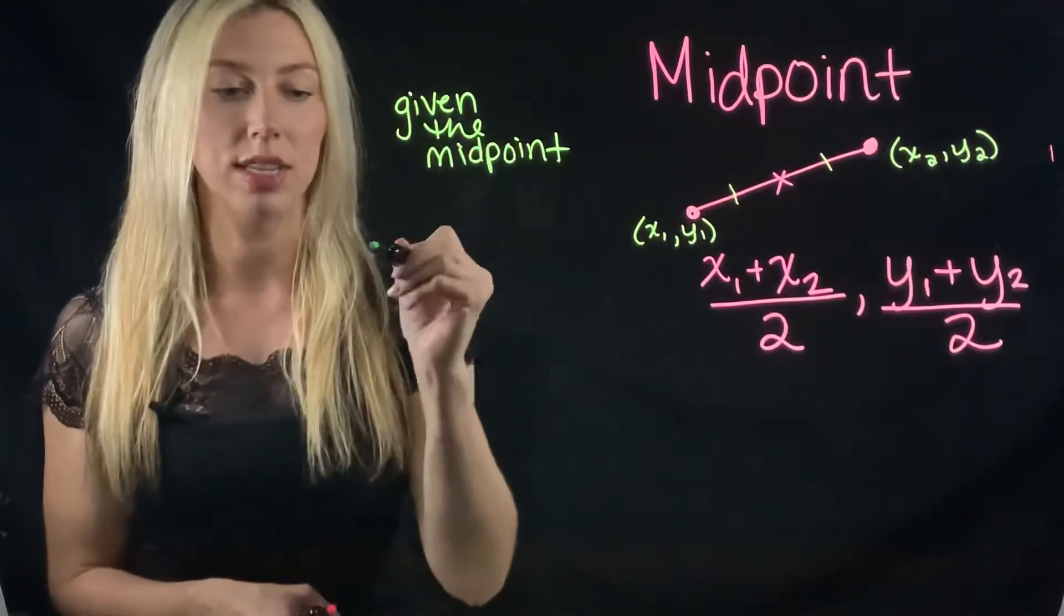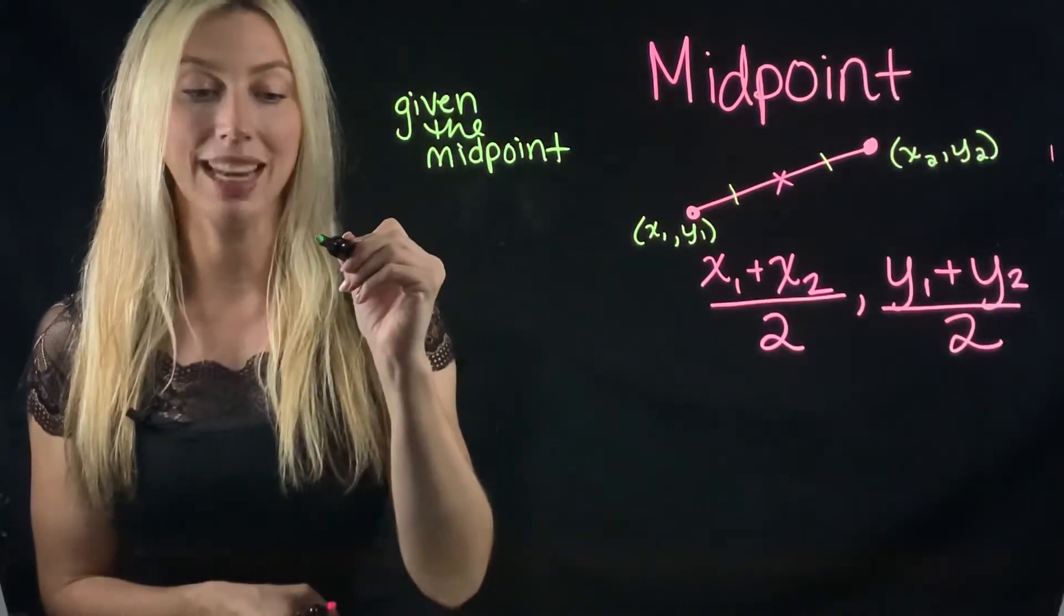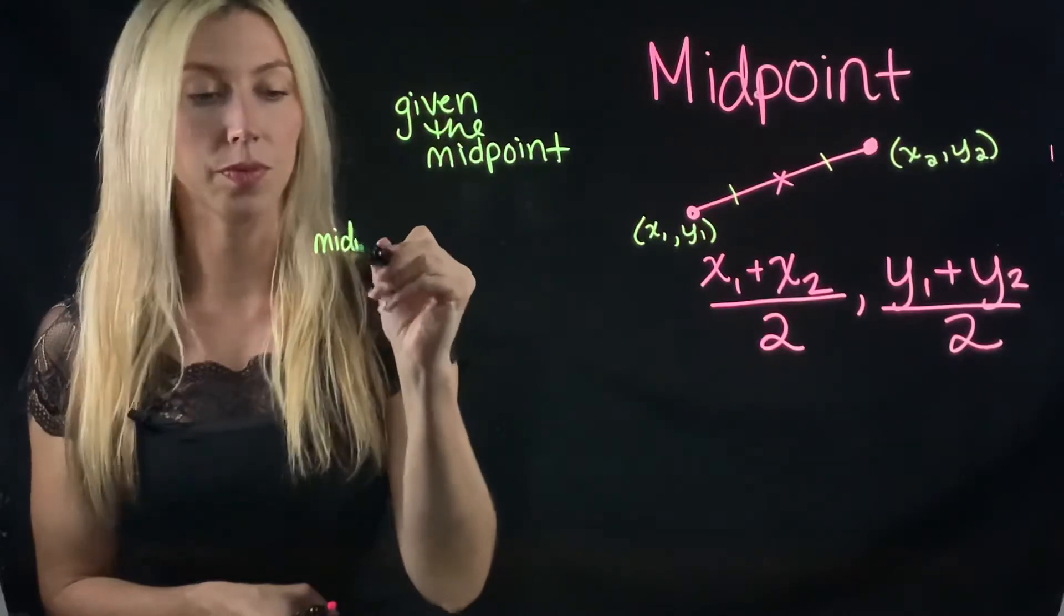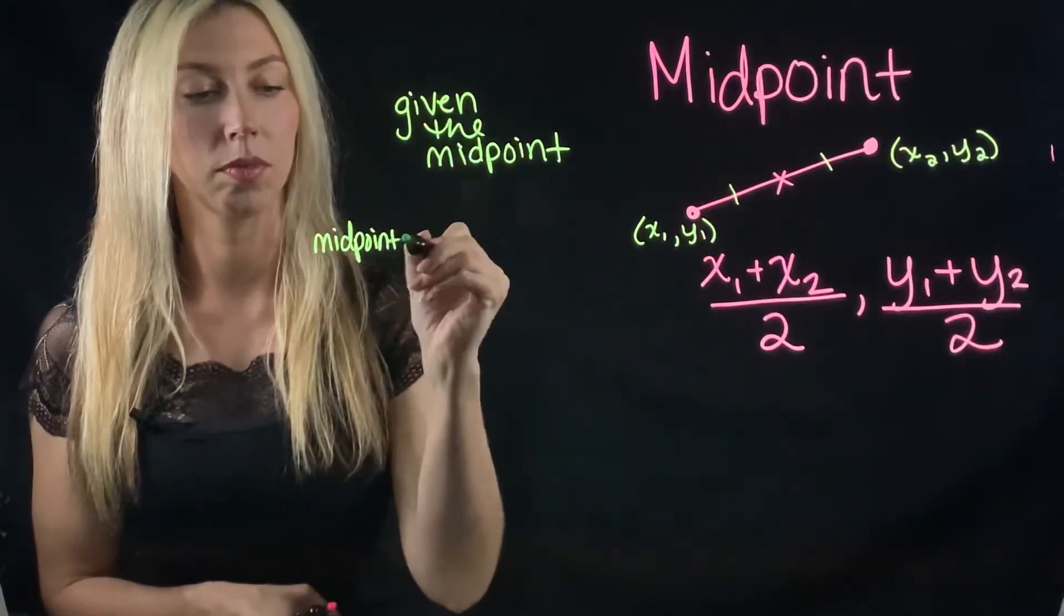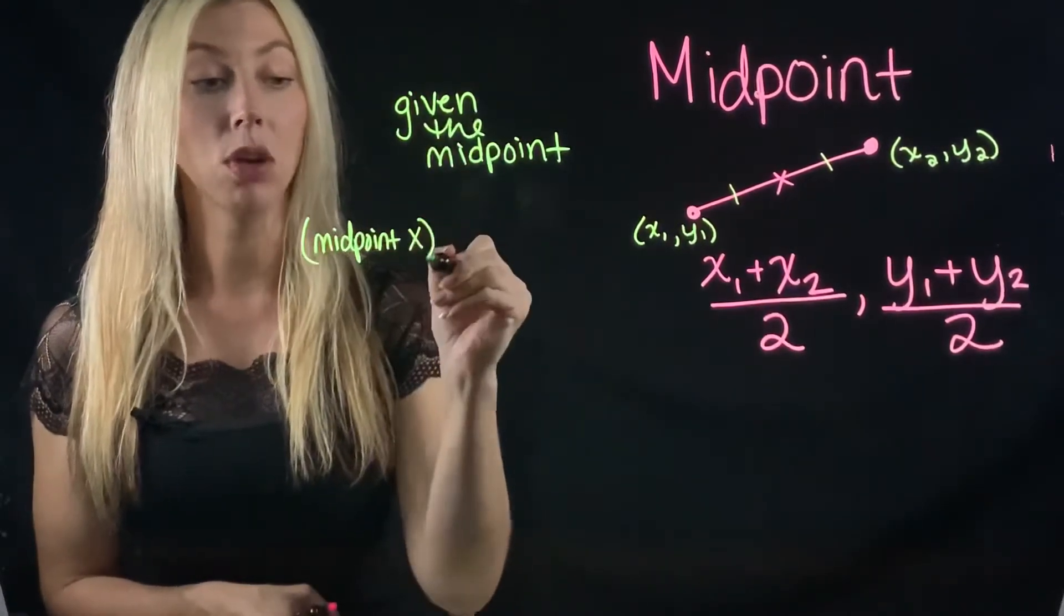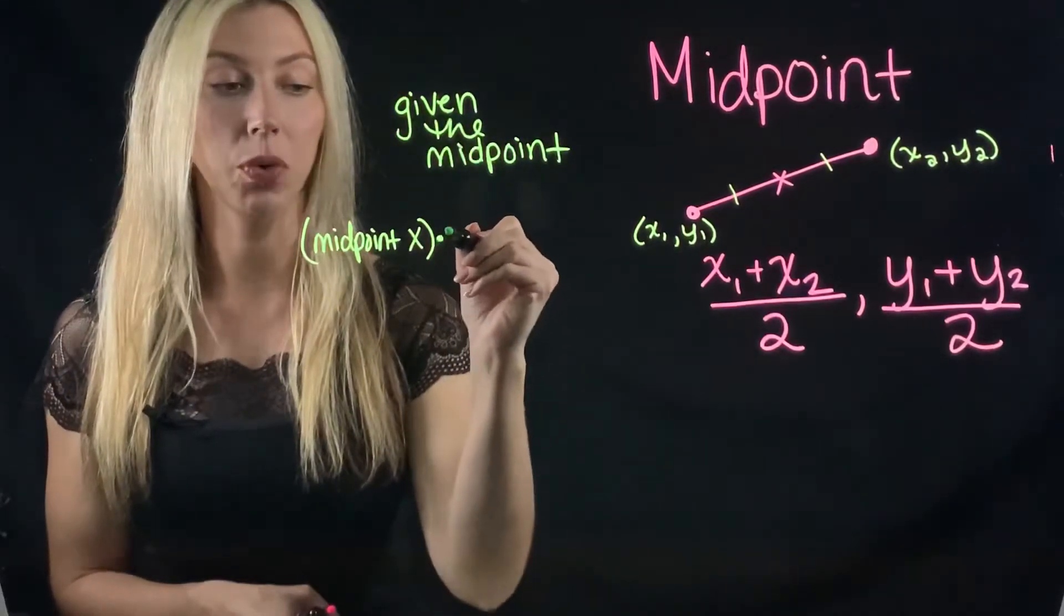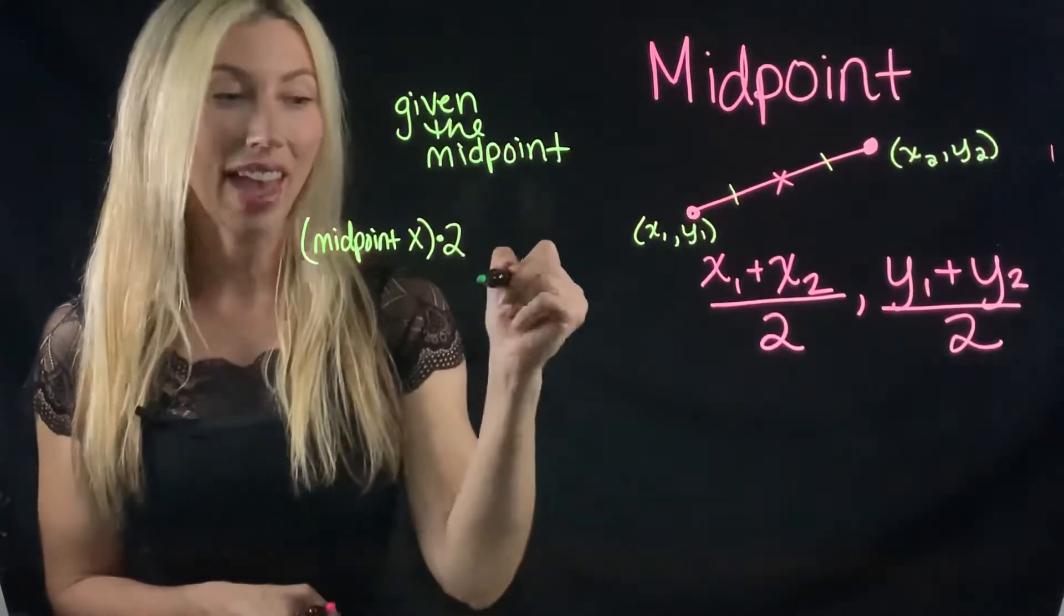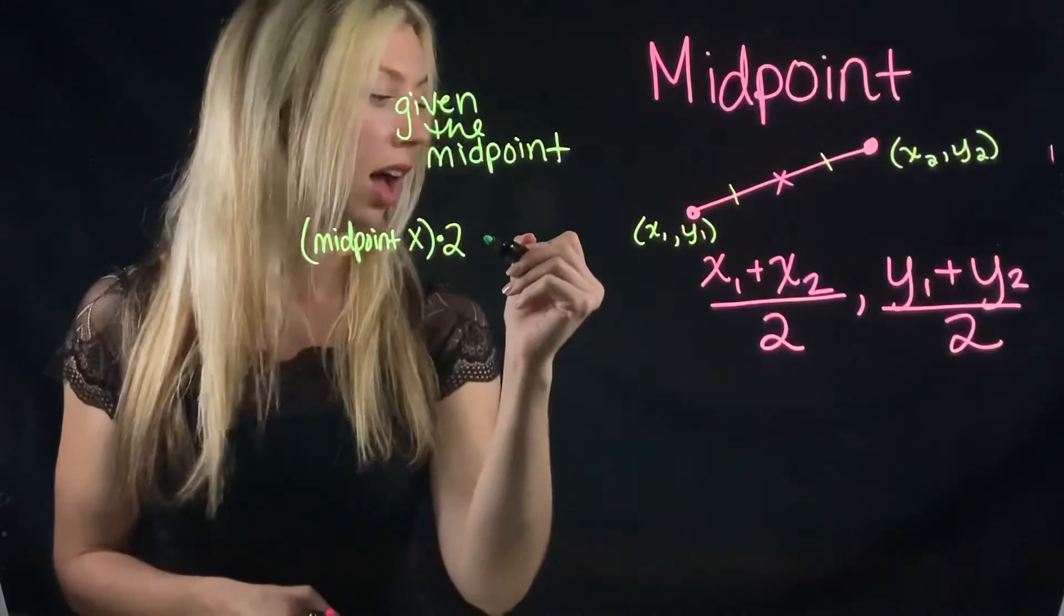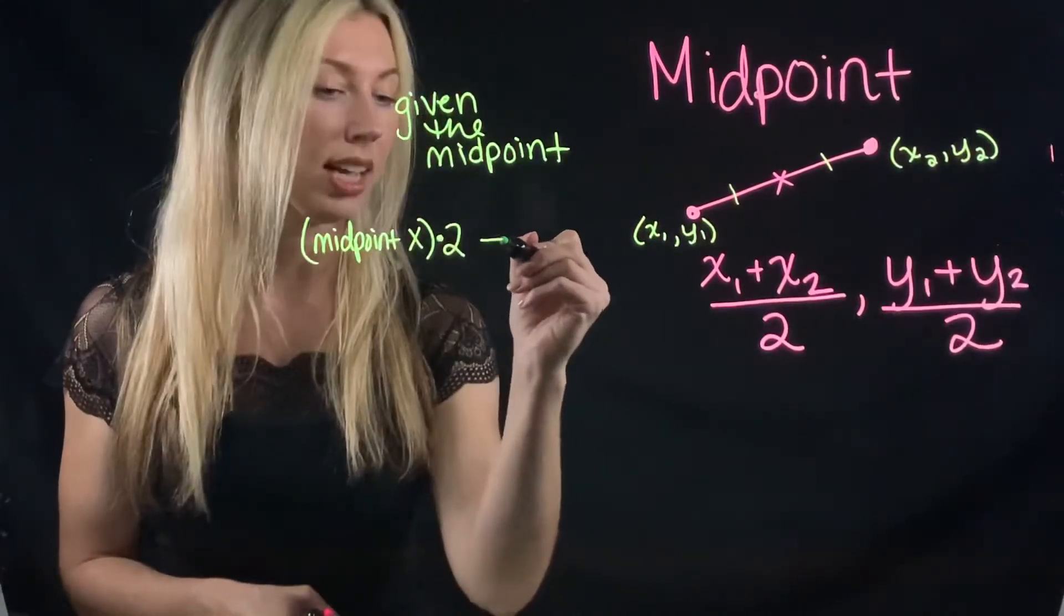And what that is, is taking the midpoint x, multiplying it by two, and then subtracting x1.